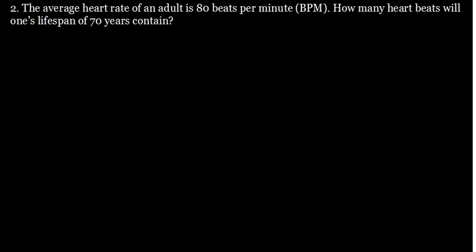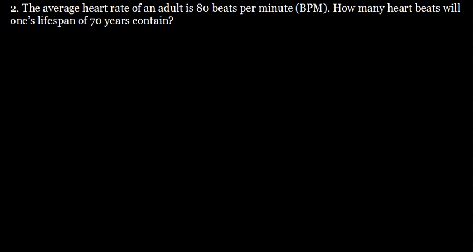The average heart rate of an adult is 80 beats per minute, BPM. How many heart beats will a lifespan of 70 years contain? So we want to know how many heart beats you are going to have if you live for 70 years, given the heart beat rate is 80 beats per minute.